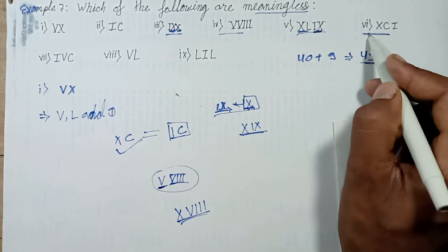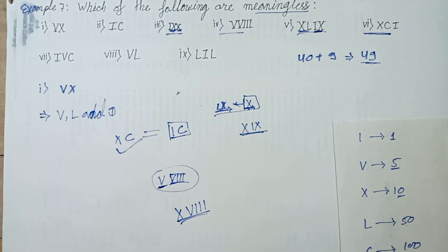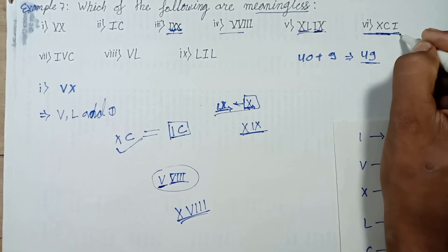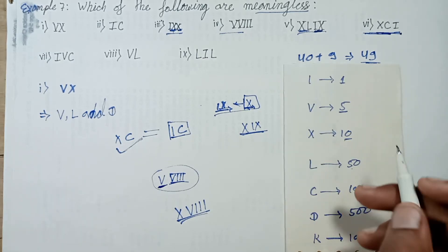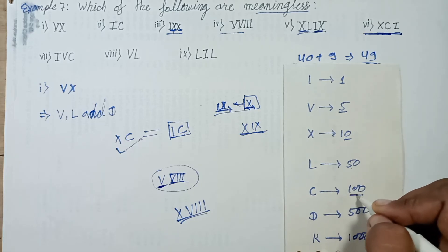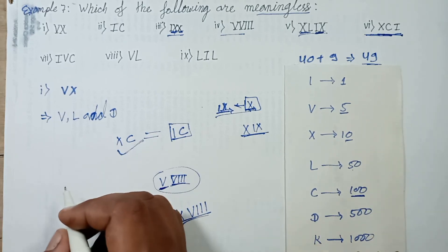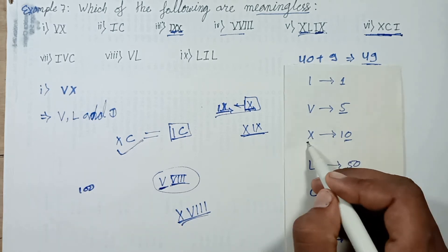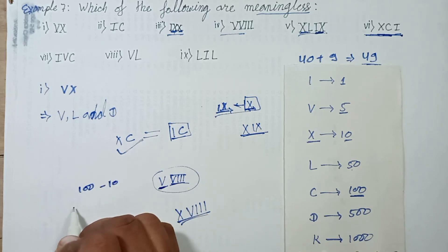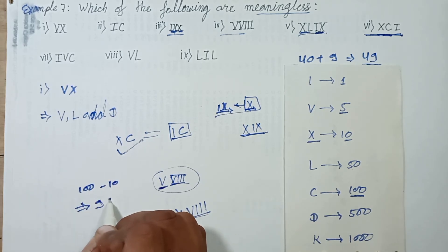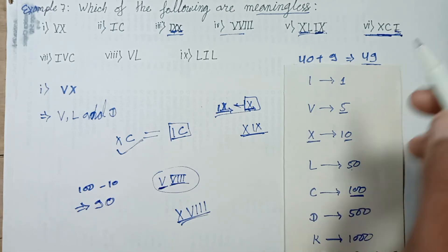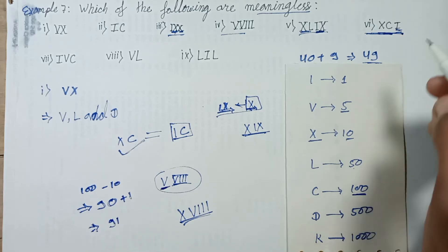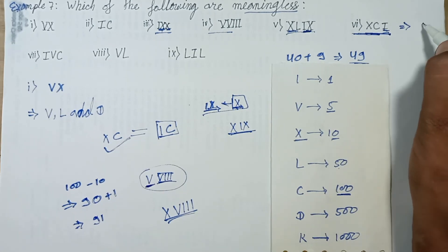Question number 6 is XCI. X represents 10 and C represents 100. C subtract 10 equals 90. Plus 1 plus 1 equals 91. This is satisfied, equal to 91.